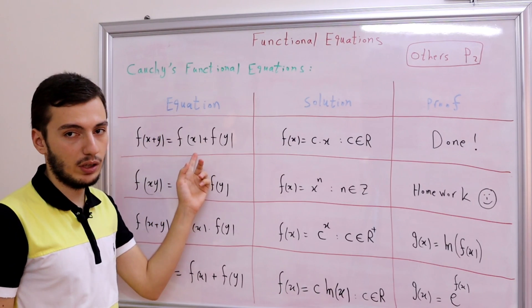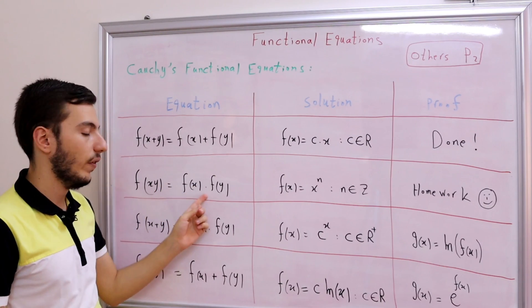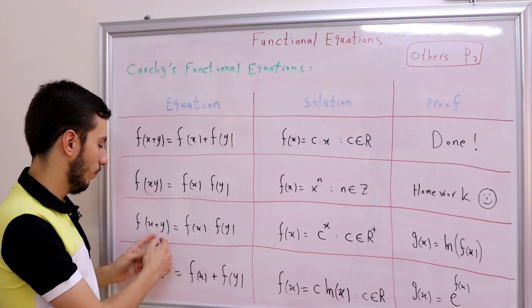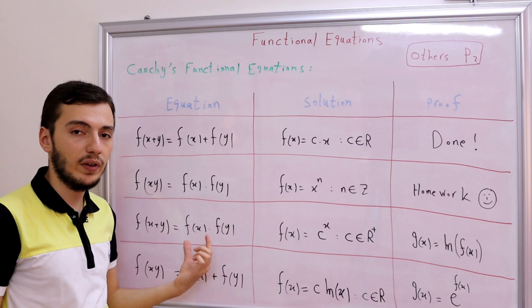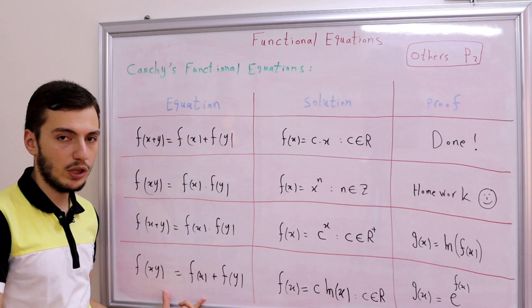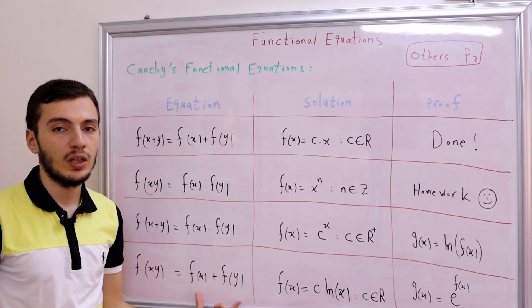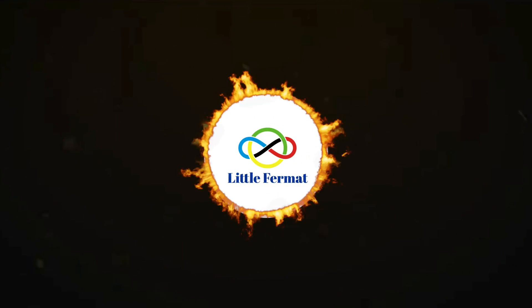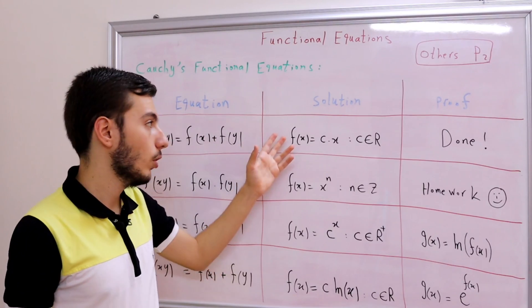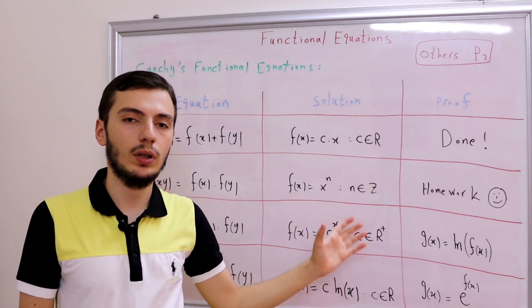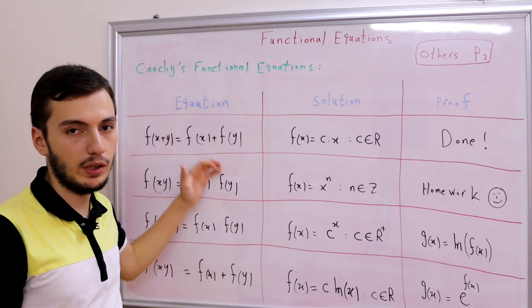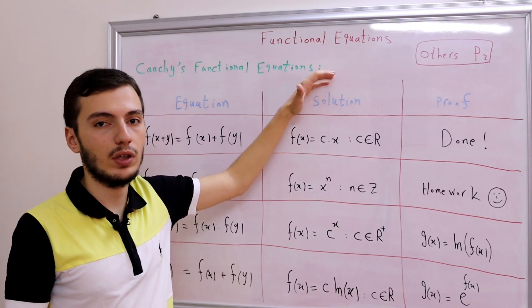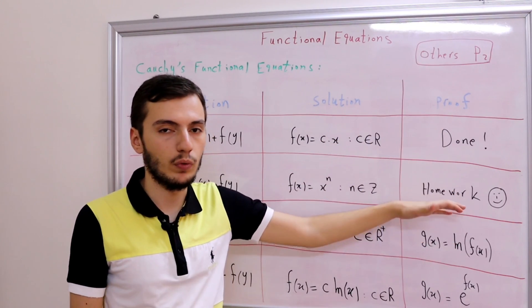I've made a simple chart organizing the equations we're going to solve today. The first column has the Cauchy's functional equations, the second has the solutions, and the third has a proof or sketch of a proof for each. So we have: the additive one (already discussed), the multiplicative one f(xy) = f(x)·f(y), the one that converts addition to multiplication f(x+y) = f(x)·f(y), and the final one that converts multiplication into addition.